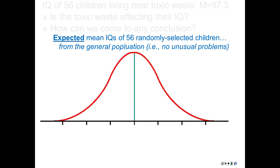It wouldn't be perfectly normal, but we can pretend because IQ is pretty close to normal. The mean would be 100 and the standard deviation is 15. But because there are 56, we're looking at the mean of 56 children. The standard deviation in this distribution isn't the distribution of all IQ scores — it's the distribution of the average of 56 IQ scores, and there's a lot less variability in averages than in individual IQ scores.